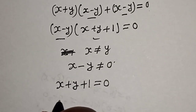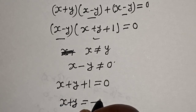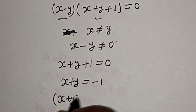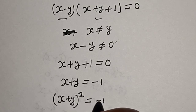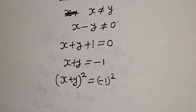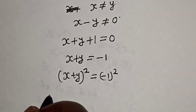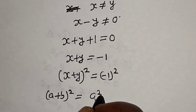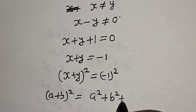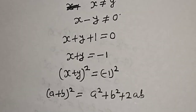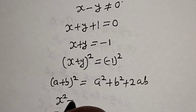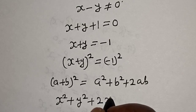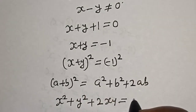Therefore the first case, x minus y cannot be equal to 0. So we consider x plus y plus 1 is equal to 0, giving us x plus y is equal to minus 1. Let's square both sides: x plus y squared is equal to minus 1 squared. Expanding using a plus b squared equals a squared plus b squared plus 2ab, we get x square plus y square plus 2xy is equal to 1.